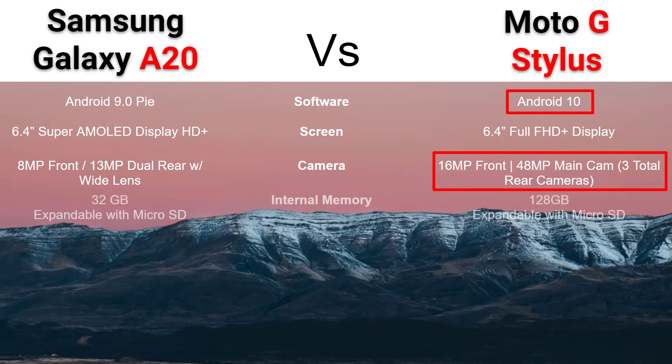Internal memory: the G Stylus blows the A20 out of the water — four times the storage at 128 gigs internal. Now both phones are expandable with a microSD card, and you can go up to a 512 gigabyte memory card. So you can expand, but you're getting a lot of storage to start out with on that G Stylus.